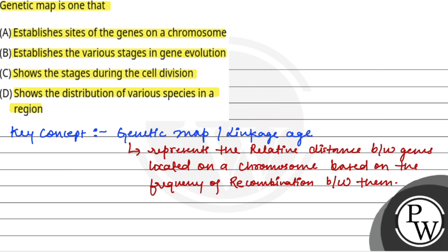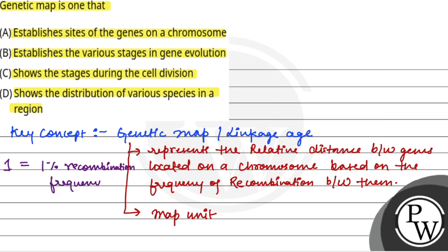The distance between genes is measured by map units, and one map unit is equal to 1% recombination frequency.